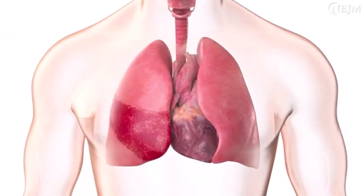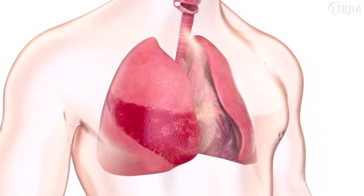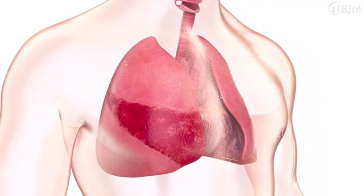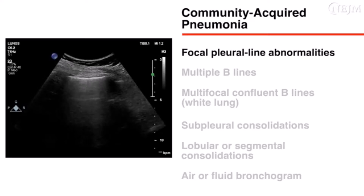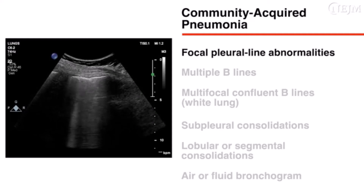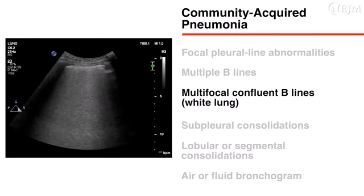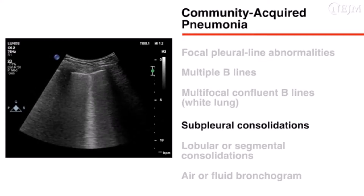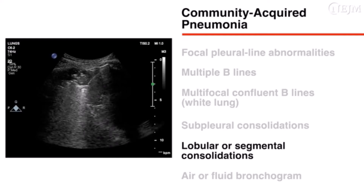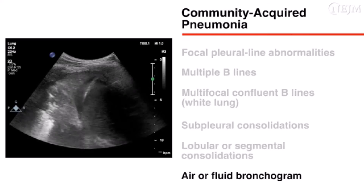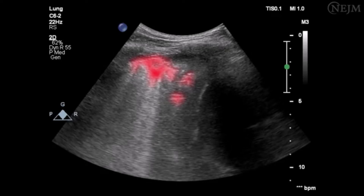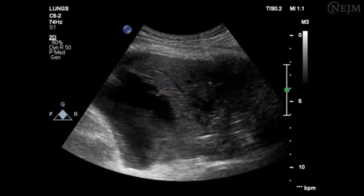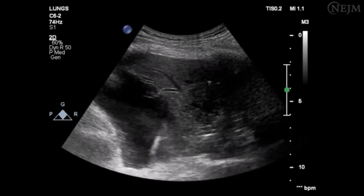Community-acquired pneumonia is an inflammatory process that initially involves only certain areas of the lung and occurs asymmetrically. As the inflammation advances, the following features may be observed: focal pleural line abnormalities making the line irregular and hypoechoic, multiple B-lines, multifocal confluent B-lines known as white lung, subpleural consolidations, lobular or segmental consolidations, and an air or fluid bronchogram. Air bronchograms are air-filled hyperechoic bronchi surrounded by consolidations. Fluid bronchograms are images of fluid-filled bronchi visible as hypoechoic bronchial lumens surrounded by consolidations.